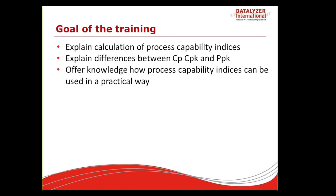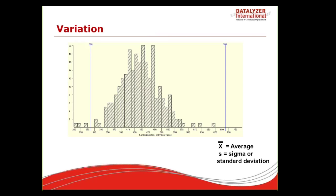The goal of the training today is to explain the calculation of process capability indices — how they are calculated and how to use them. There is a lot of confusion between CP, CPK, and PPK, and a lot of mistakes being made, so I'm going to explain what the differences are and where the confusion originates. We also want to offer you knowledge on how capability indices can be used in a practical way and what their advantage is in day-to-day business.